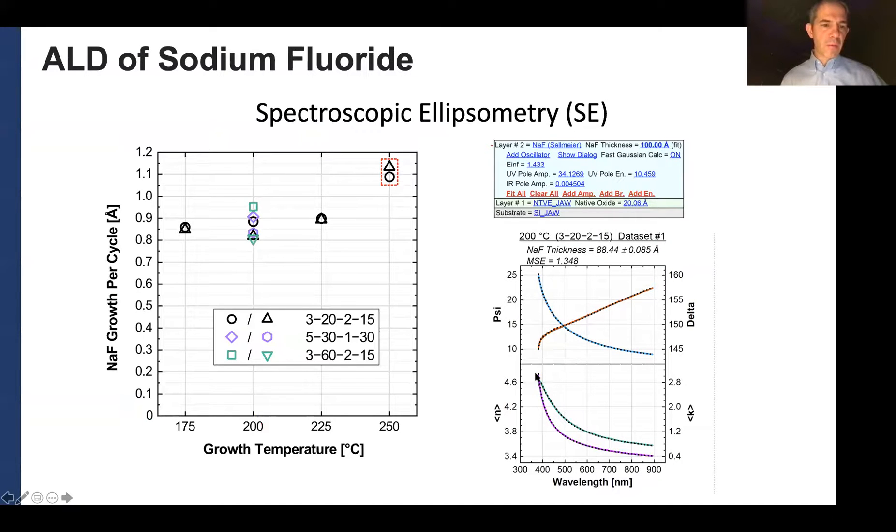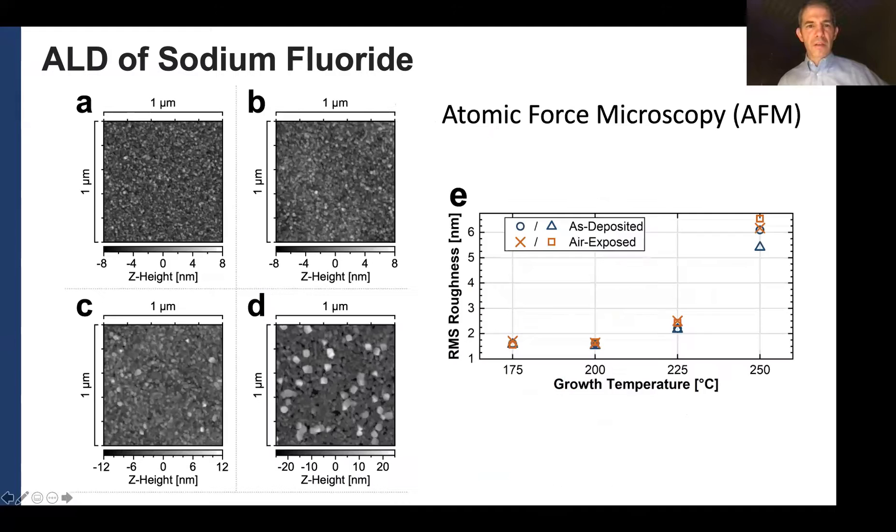If we look at the growth rate or the growth per cycle, sorry, we're just under an angstrom per cycle at 200 C. It goes up slightly at higher temperatures. And these were measured with ellipsometry for these different growth conditions. So we do have a little bit of spread here, where we change our purge times and pulse times. In terms of atomic force microscopy, we can look at the surface morphology and see some of these crystallites that form and maybe we get a little bit more porosity than we would like for the 250 C temperatures and a little bit rougher film than if we had at 175 or 200. Those aren't labeled.